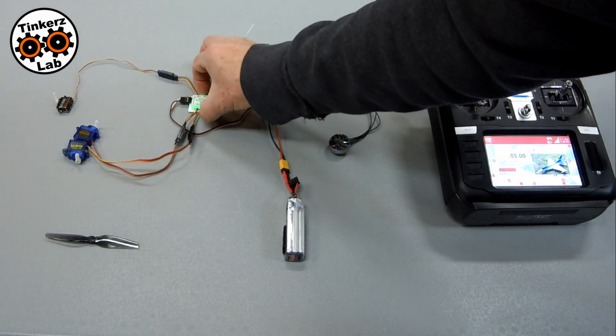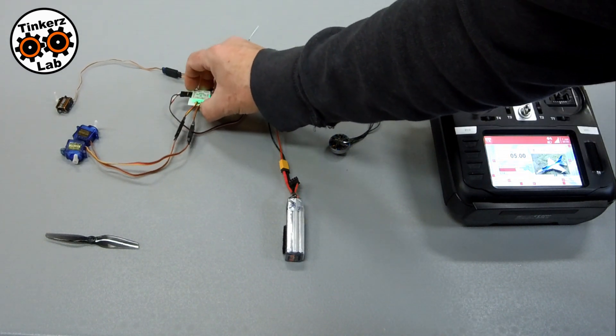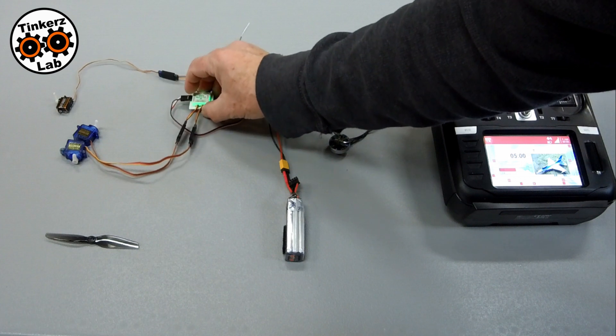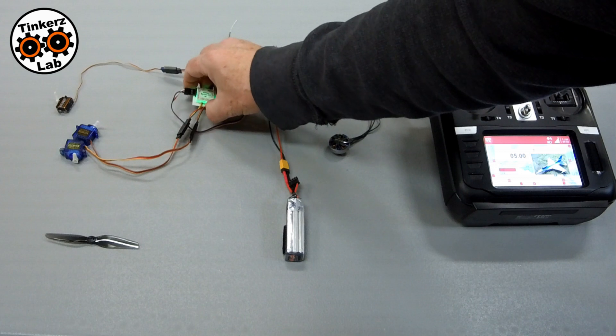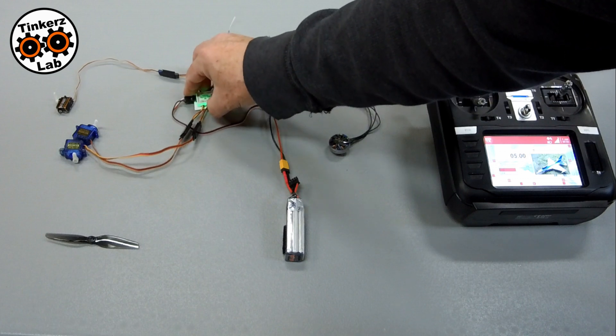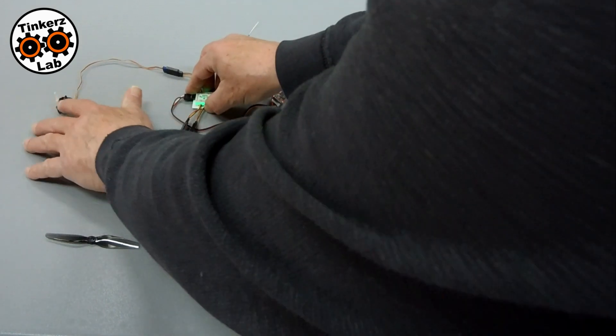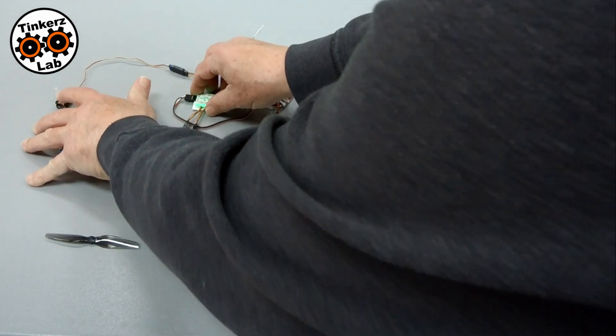And now if I roll it, you'll see that it is correcting the ailerons. If I pitch it, you'll see that it's correcting the elevator. And then if I yaw it, you'll see that it's correcting the rudder.